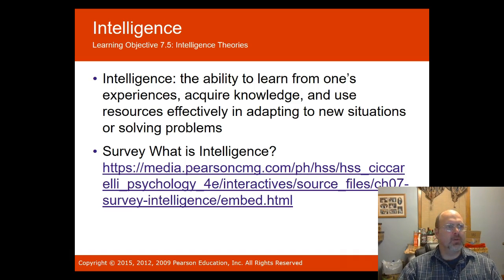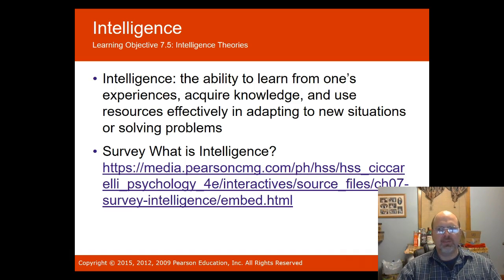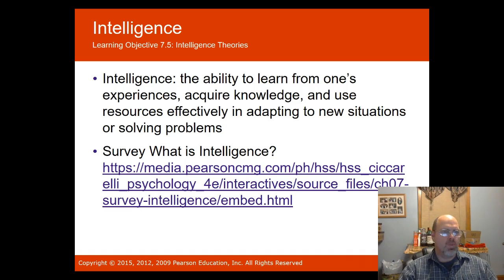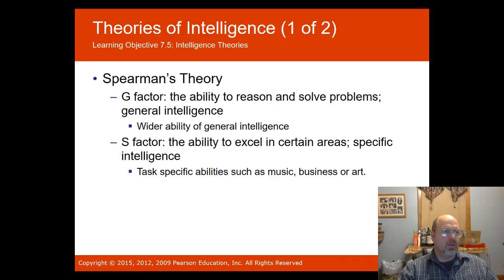Intelligence is the ability to learn from one's experiences, acquire knowledge, and use resources effectively in adapting to new situations or solving problems. Think about what it means to be smart — is it the same as being intelligent? The answer depends on the immediate task or context. Like the city mouse and country mouse, intelligence depends on how you function in your environment.